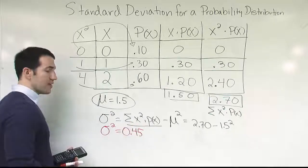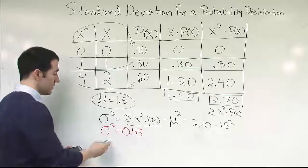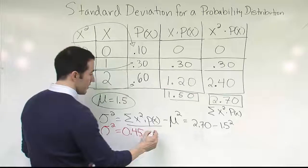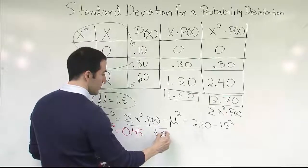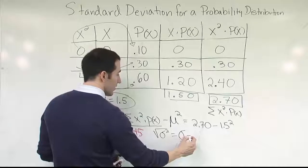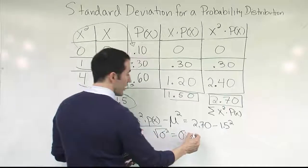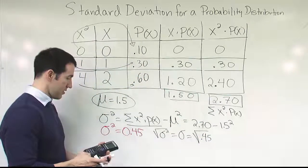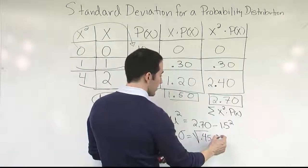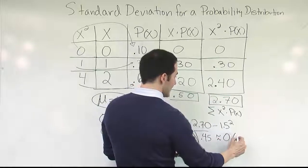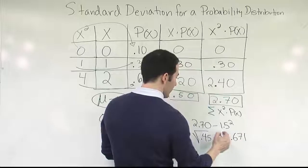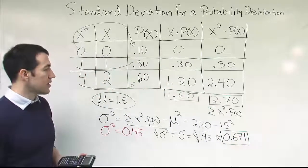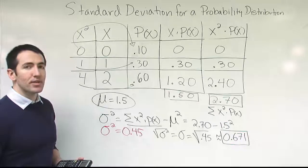All right. From there, to move down to the standard deviation, we just have to take the square root, right? Take the square root of the variance, and we'll end up with our standard deviation. Okay. So if I take the square root of sigma squared, I end up with sigma, which in this case is going to be the square root of .45. And if I do that, we get approximately 0.671. Let's round it off to three decimal places. Of course, the decimal goes on and on, but 0.671 is the standard deviation.